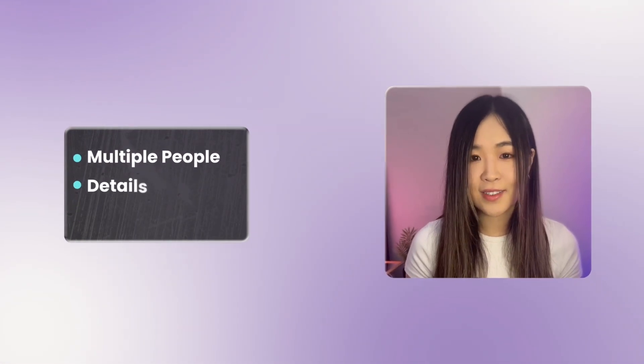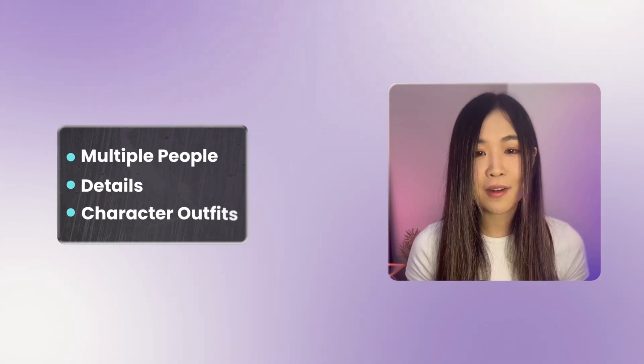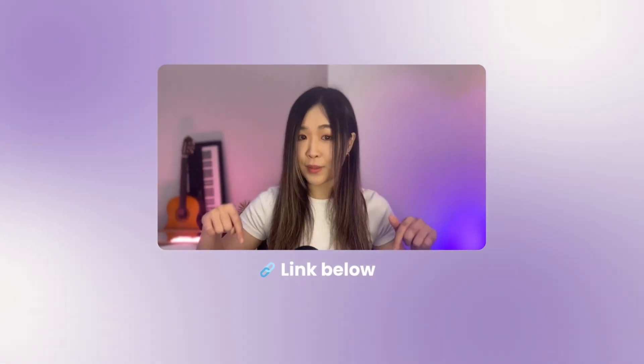That's reference-to-video: you get complete control over consistency by giving the AI the full picture upfront. Whether it's multiple people, details, or character outfits, you're no longer limited to hoping the AI guesses correctly. Try this with your own projects using the link below, and let me know what you think about this feature. Thanks for watching, and I'll see you in the next one.